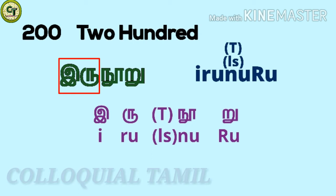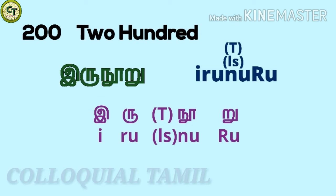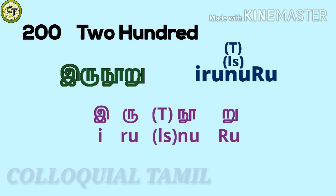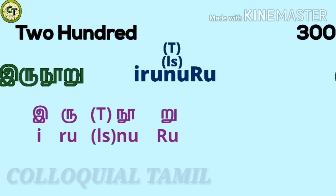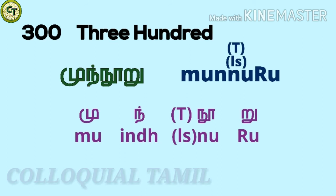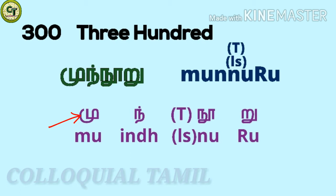For 200: iru noo ru. You just add these two letters to noo ru. E is a short sound vowel, iru is a short sound letter. When joined with noo ru, it becomes iru noo ru.